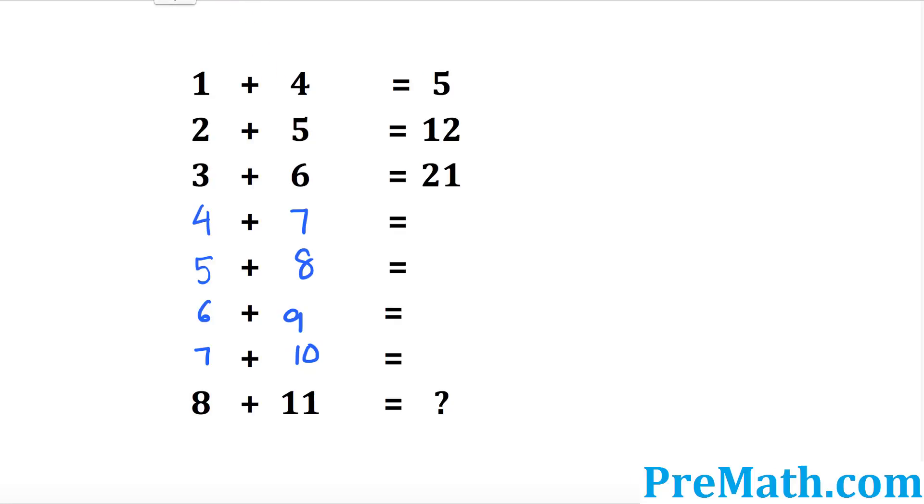Now, the next thing you're supposed to do is once you have done this, I want you to simply add these two numbers on the left hand side. 1 plus 4 is going to give you 5. Now I want you to add 2 plus 5, that's going to be 7, 3 plus 6 become 9, 4 plus 7 is going to become 11. This is going to be 13, this is going to be 15, this is going to be 17 and this is going to be 19.